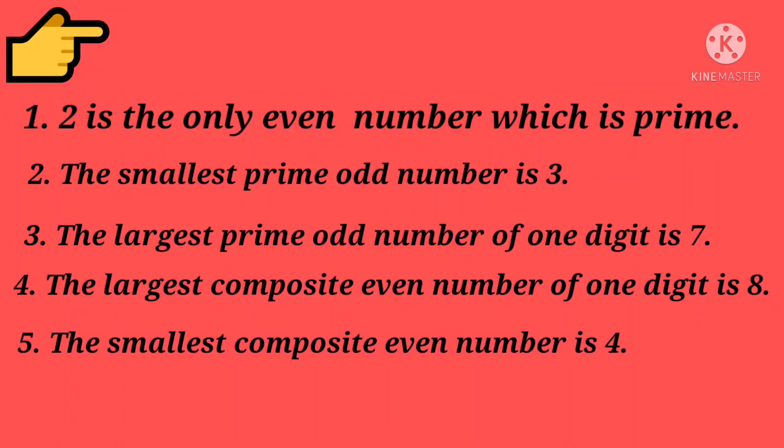The largest composite even number of 1 digit is 8. The smallest composite even number is 4. And the smallest composite odd number is 9.